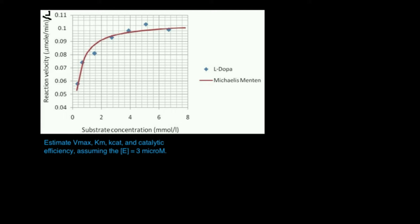The first thing I want to calculate is the Vmax — in fact, you have to do it first on a Michaelis-Menten curve. For a Michaelis-Menten plot, you have the rate of reaction or reaction velocity, sometimes designated as V0, on the y-axis, versus the concentration of the substrate on the x-axis. If there's a specific substrate — here it's L-dopa — you'd see the concentration of L-dopa. Sometimes they'll just put the generic concentration of S.